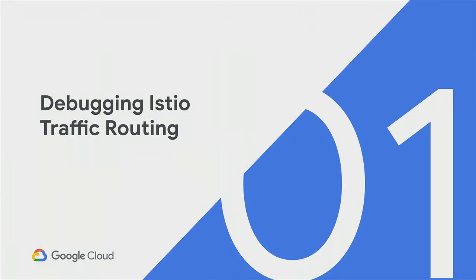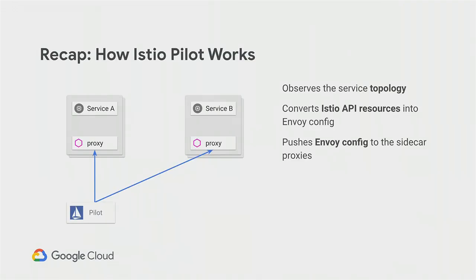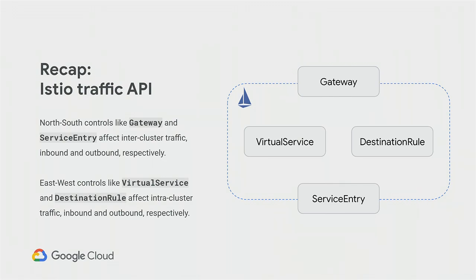We're starting with traffic management — how do you debug Istio traffic routing? As a quick recap, the way Pilot works: you push your virtual service rules, gateway rules, or policies up to the control plane, and Pilot makes sure those rules get pushed out to all the Envoy proxies. The traffic API covers north-south traffic (gateway and service entry) and east-west traffic within the mesh (virtual service and destination rule), used to configure traffic splitting, steering, ingress, and egress.